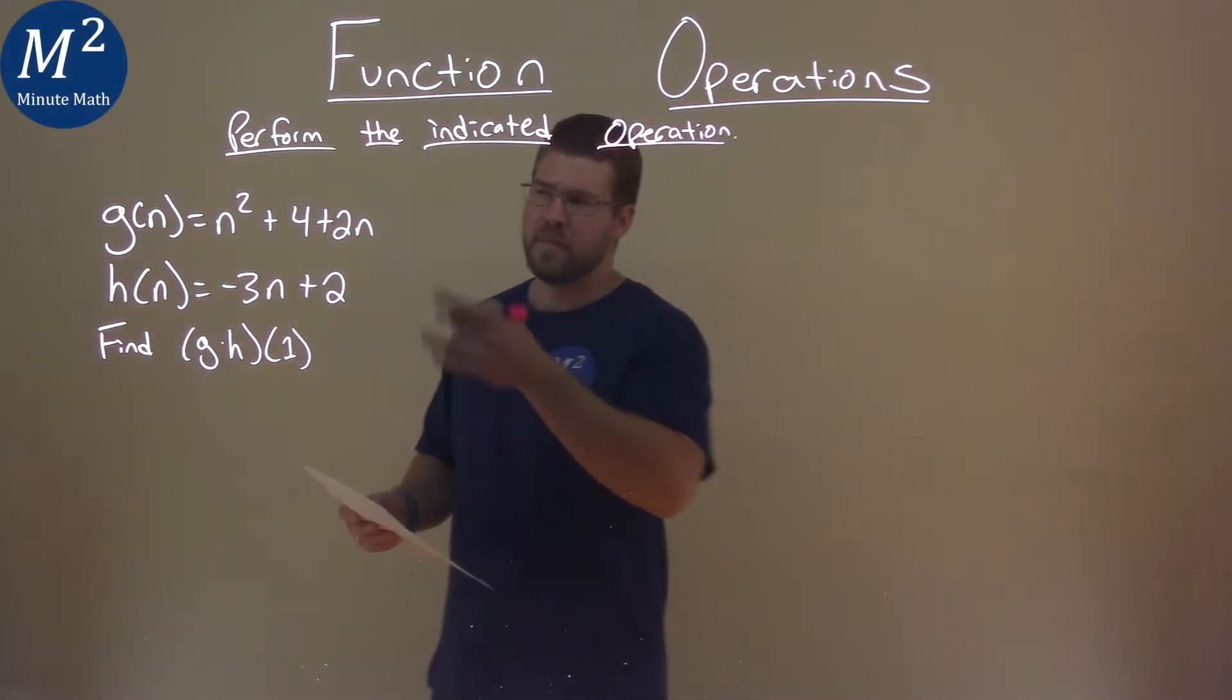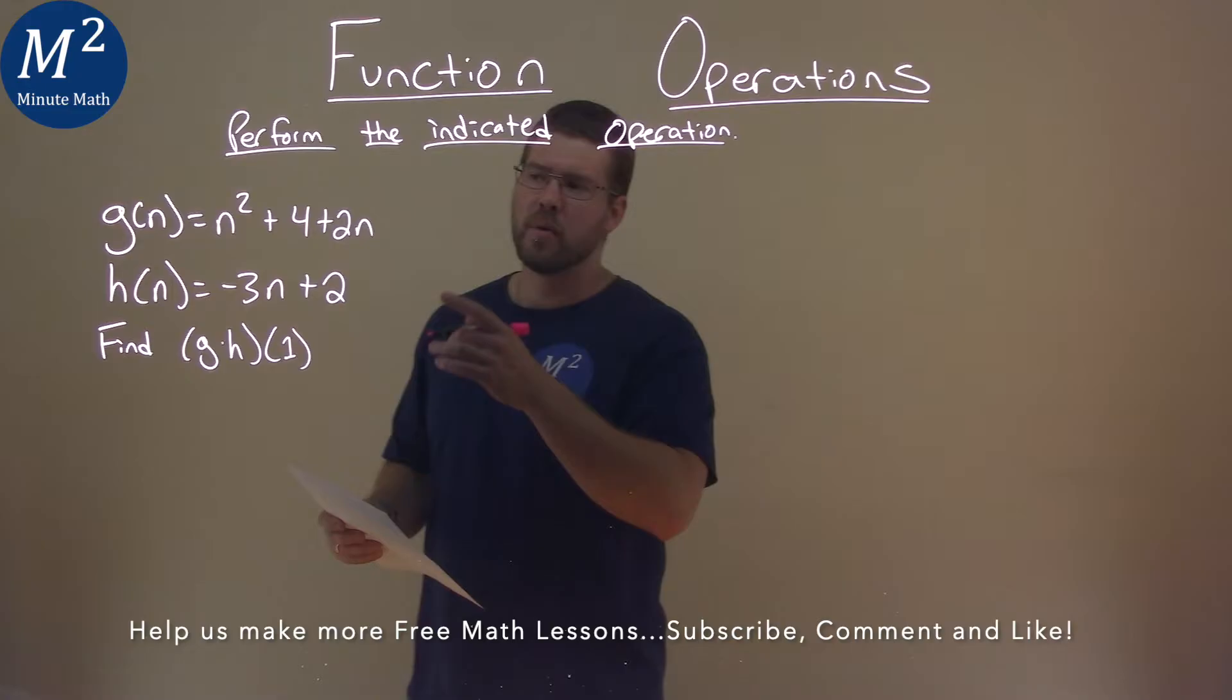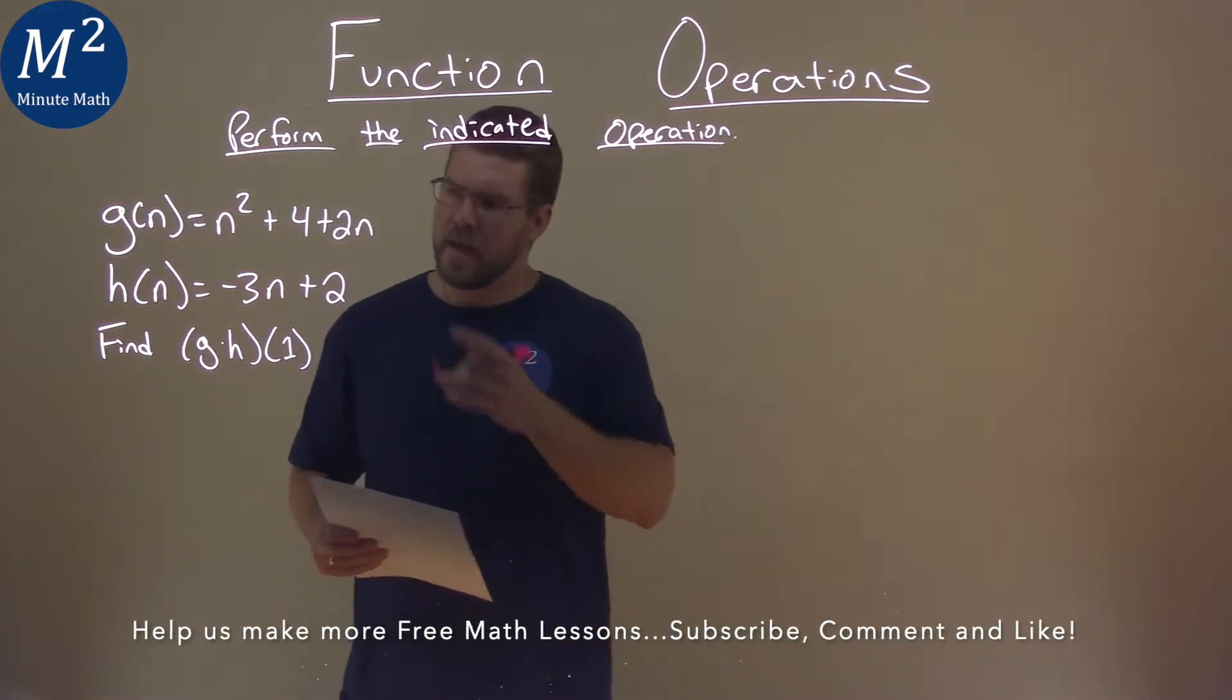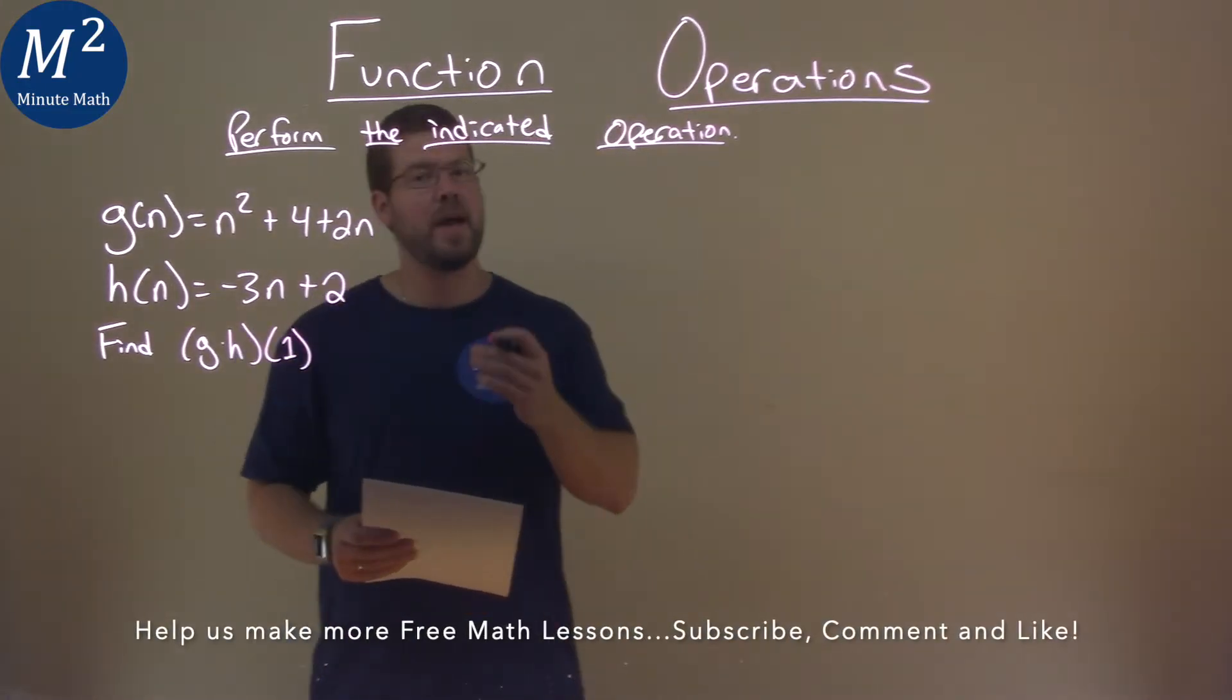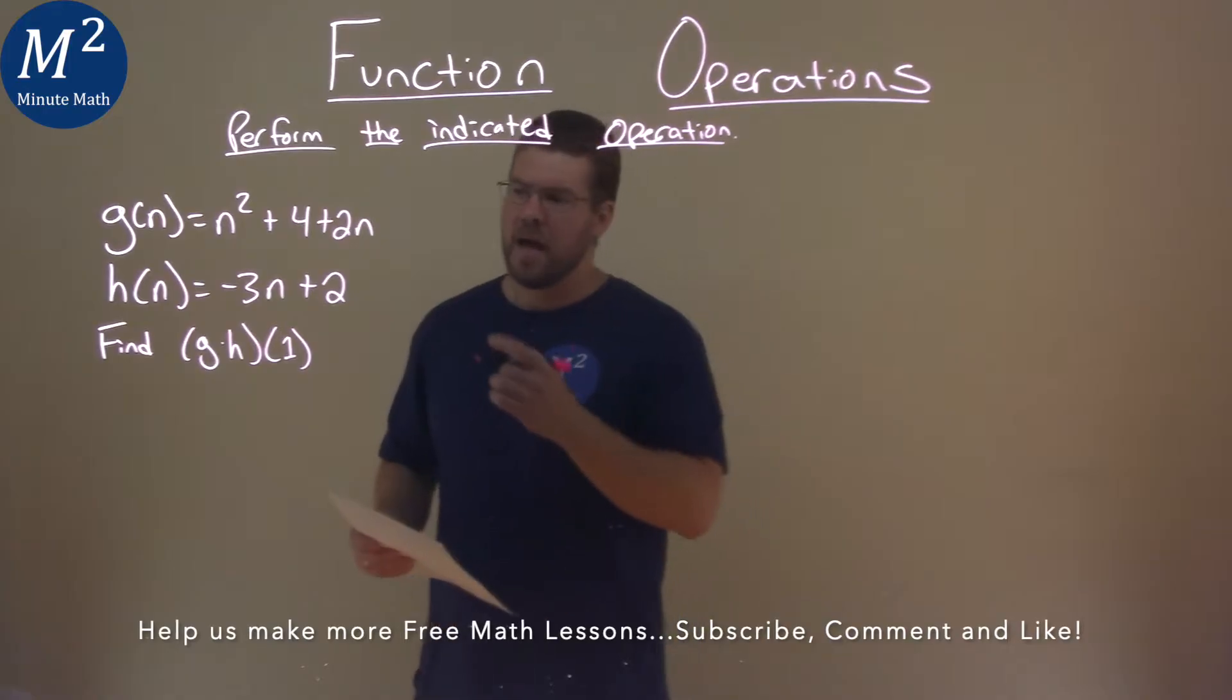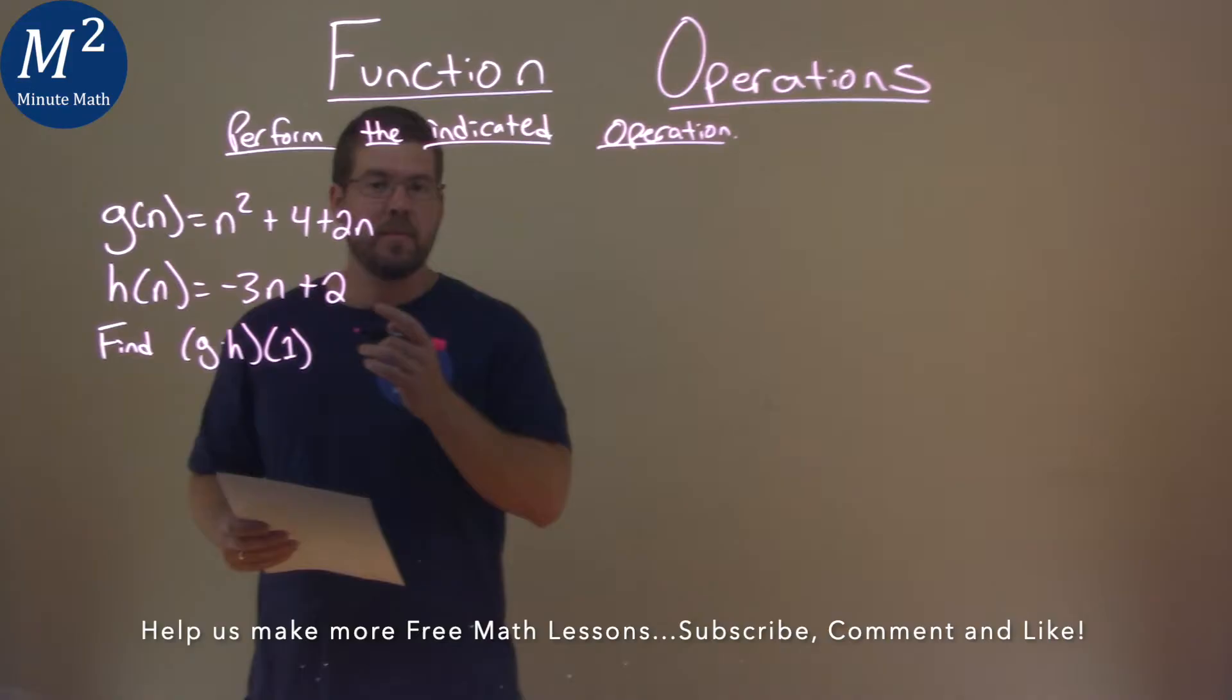We're given this problem right here. g of n is equal to n squared plus 4 plus 2n. h of n is equal to negative 3n plus 2 and we have to find g times h of 1.